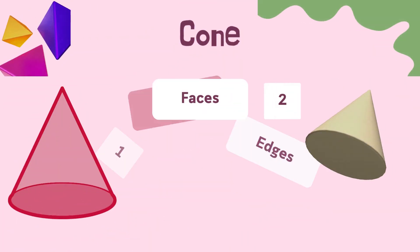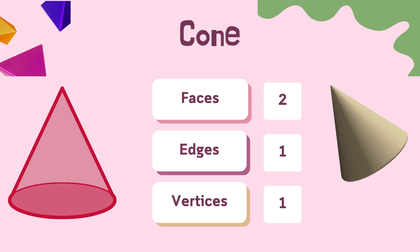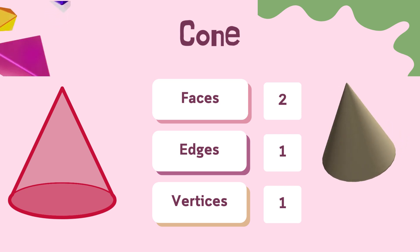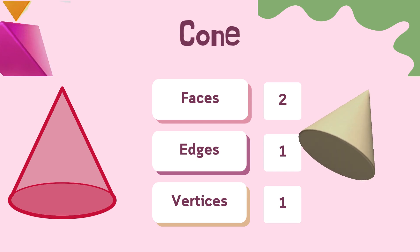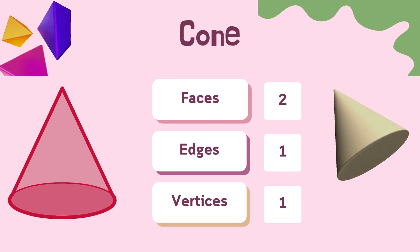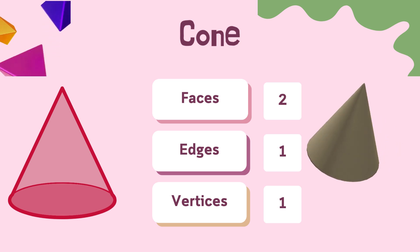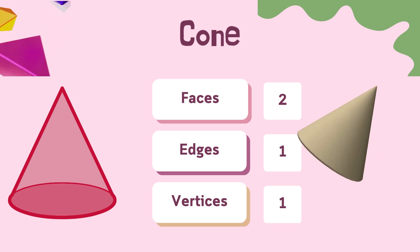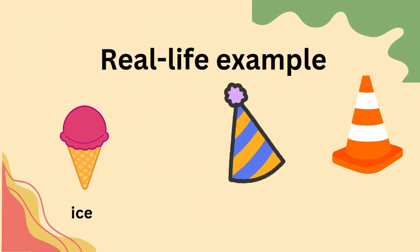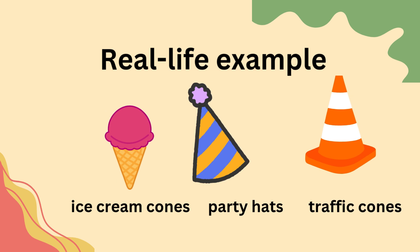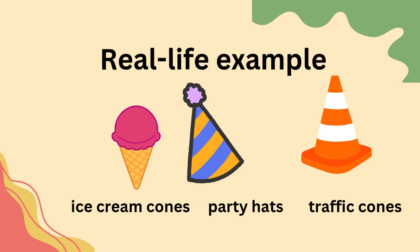Hi there. I'm a cone. I have one flat face — a circle at the bottom. I have one curved surface. And I have one vertex — that's my pointy top. You see me in ice cream cones, party hats, and traffic cones. I'm pointy and cool.